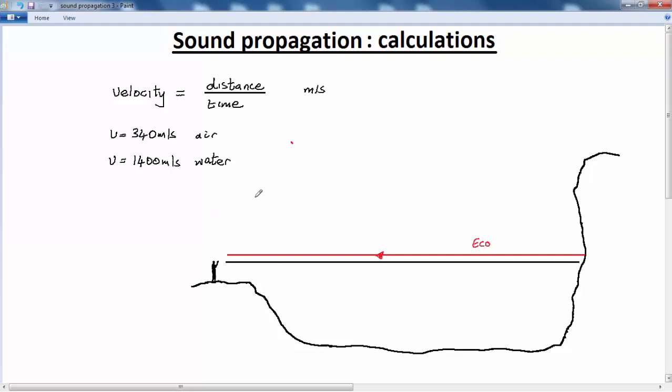So this is really just a standard motion problem involving velocity, distance and time. Let's say, for example, that the echo takes two seconds to return to the shouter and we need to therefore calculate the distance from the man to the mountain.